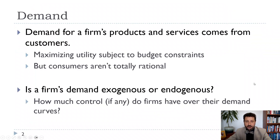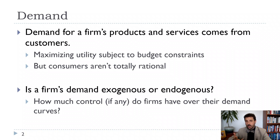So we have to think starting with demand. Demand comes from customers — customers are going to think about the price of the good, substitutes available, and complements available. Customers we generally think of as maximizing utility, but it's important to realize — and firms definitely realize — that customers are not fully rational. We'll talk about that a little bit at the end and throughout the course.